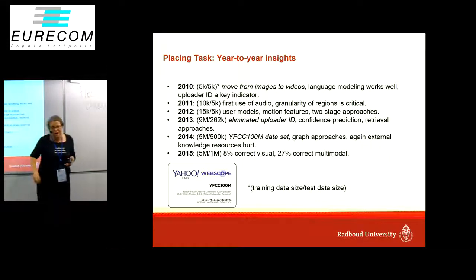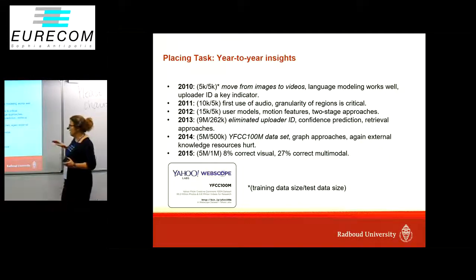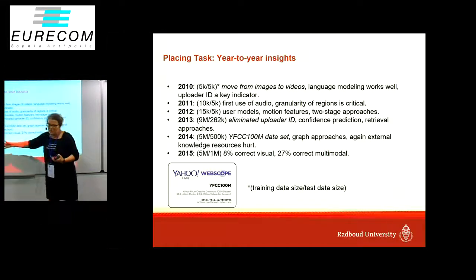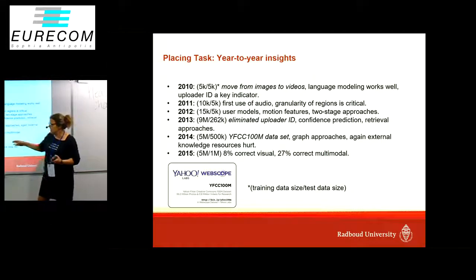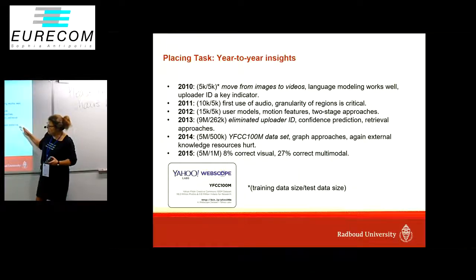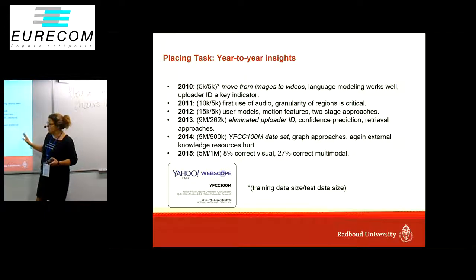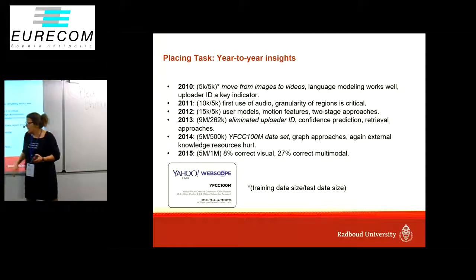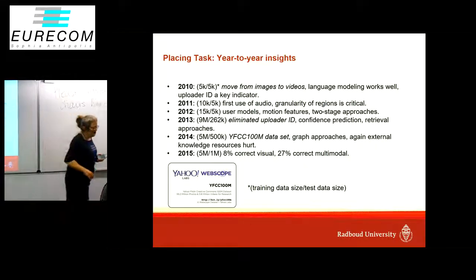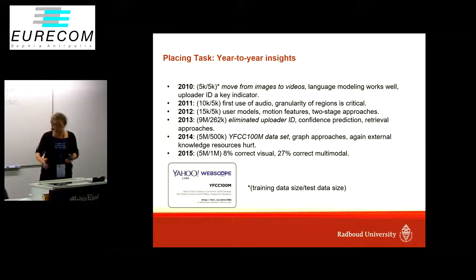In 2014 the YFCC100M dataset was published — the work at MediaEval kind of fed into Yahoo actually publishing this dataset, which many of you are probably using. We also explored graph approaches and found that external resources weren't helping us anymore. Finally in 2015, we could get 8% correct geolocations using only visual features and 27% correct using multimodal features.